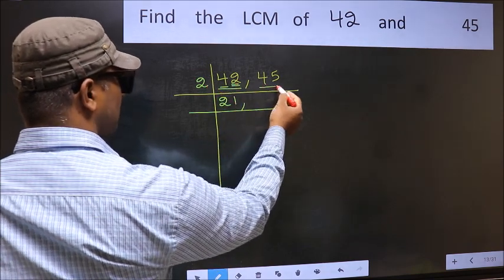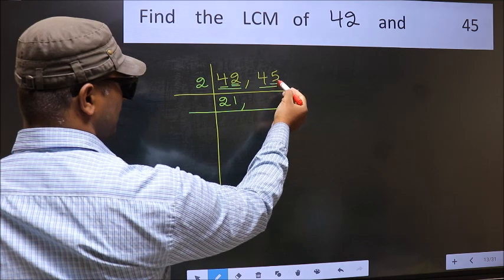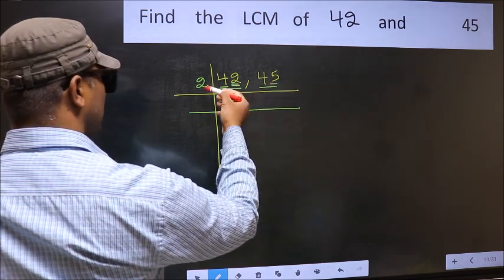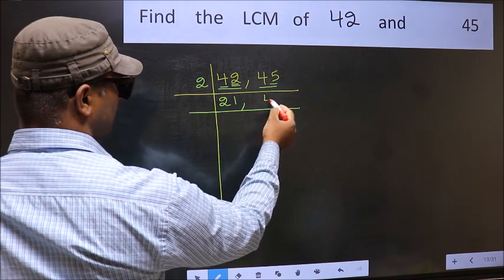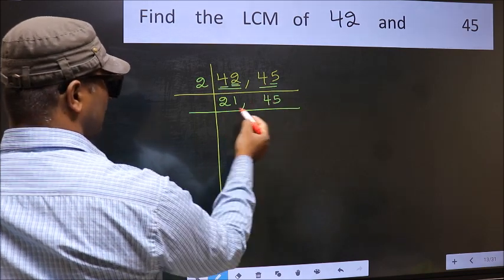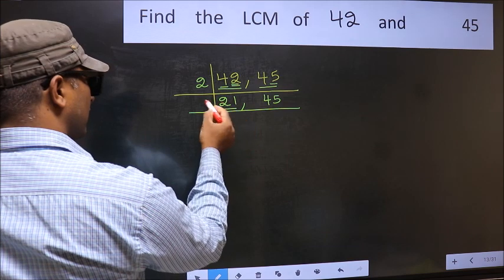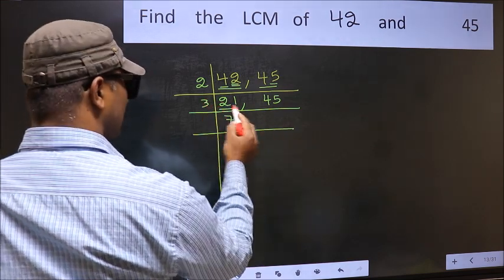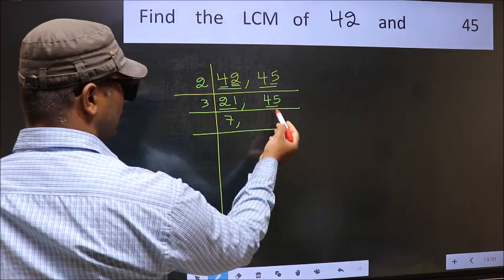The other number 45, last digit 5, not even, so this is not divisible by 2. Write it down as it is. Now here we have 21. 21 is 3 times 7. The other number is 45. To check whether 45 is divisible by 3 or not...